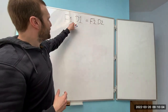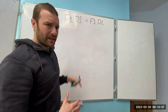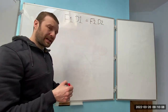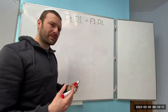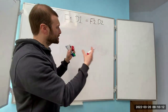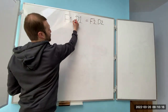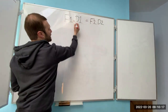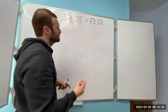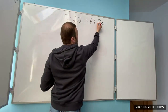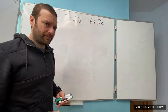Where we've got F1 and D1, they're separated — they're not the same thing. But in between those, it's assumed that anything next to each other is a times. So in actual fact, what we have is: Force 1 times Distance 1 equals Force 2 times Distance 2.